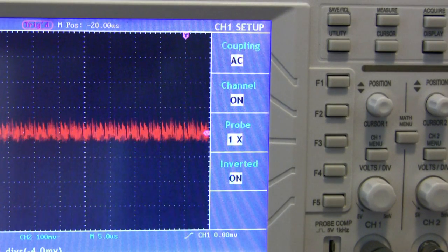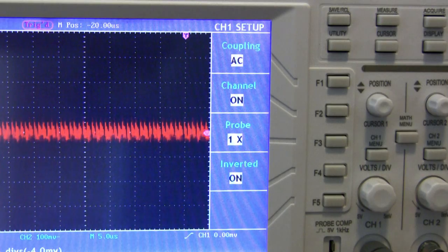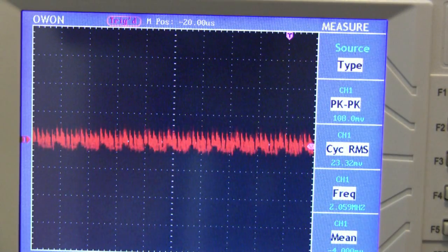Now according to the display, each division is representing 100 millivolts. So the AC ripple of this signal is approximately 100 millivolts from peak to peak.